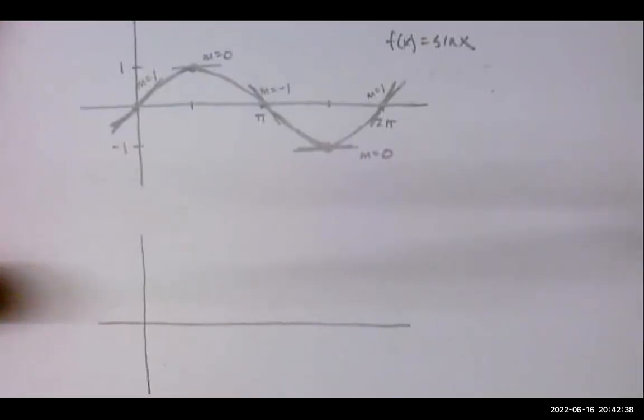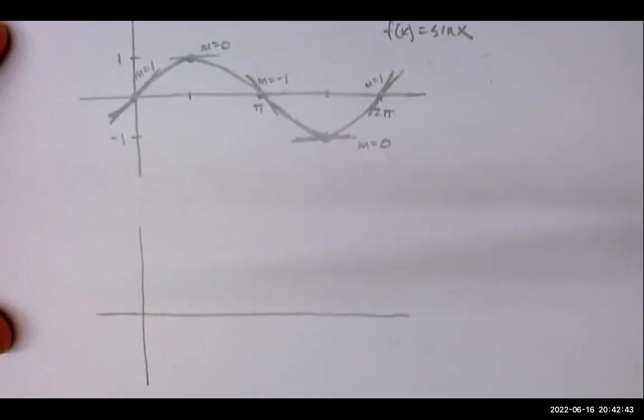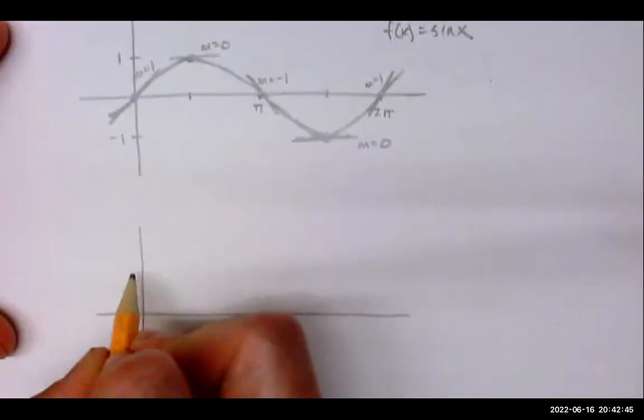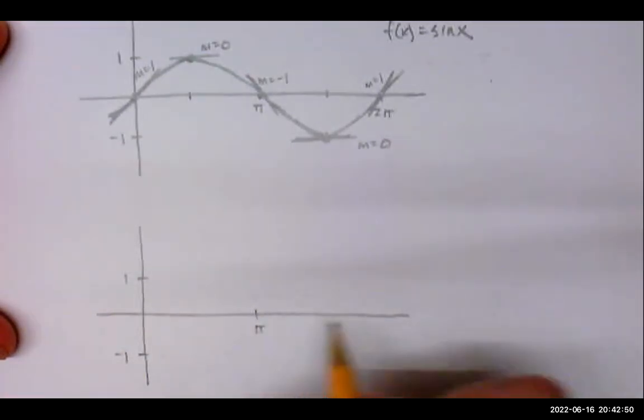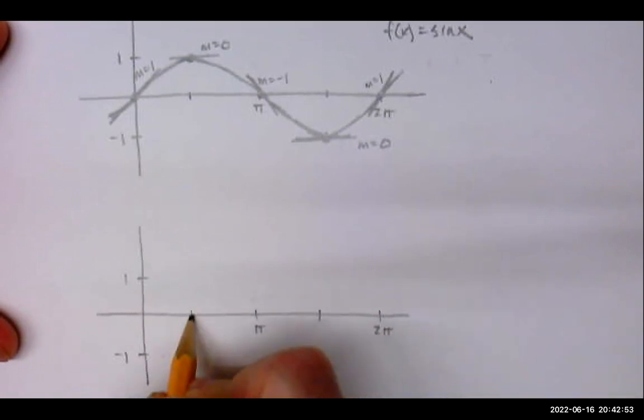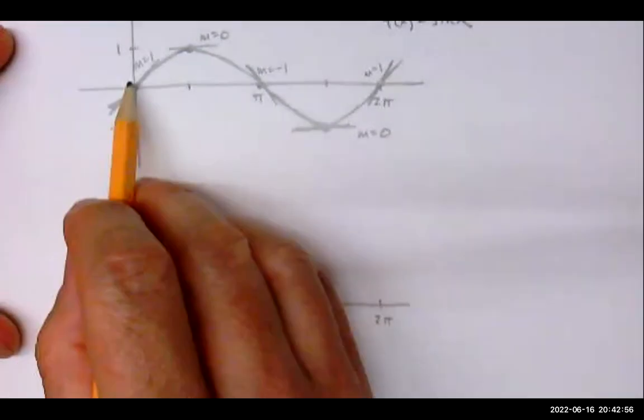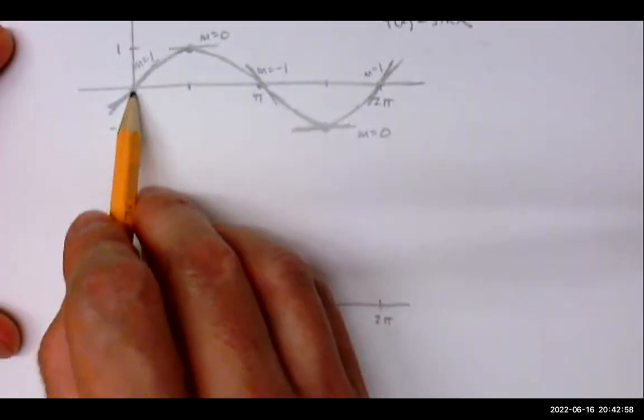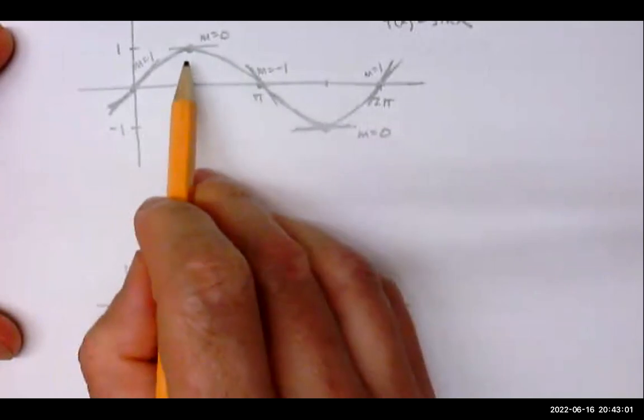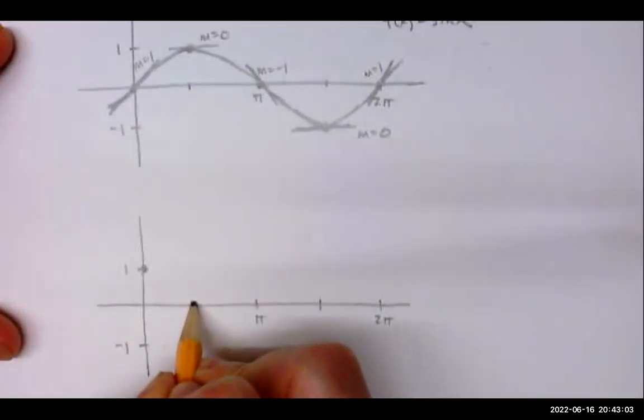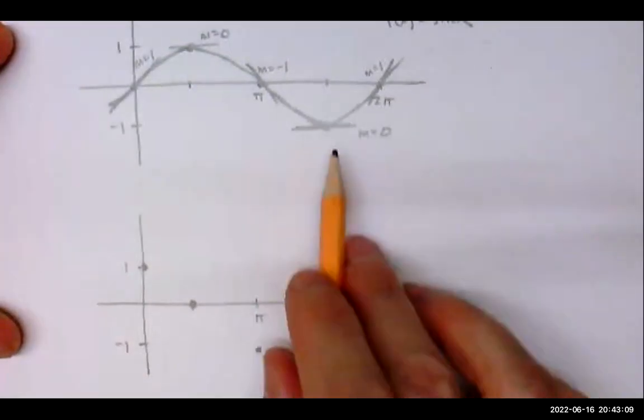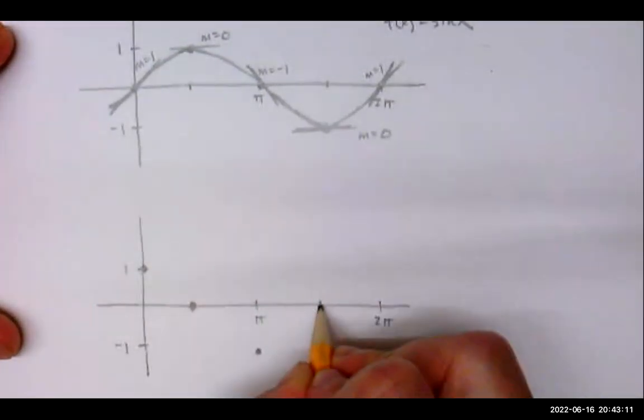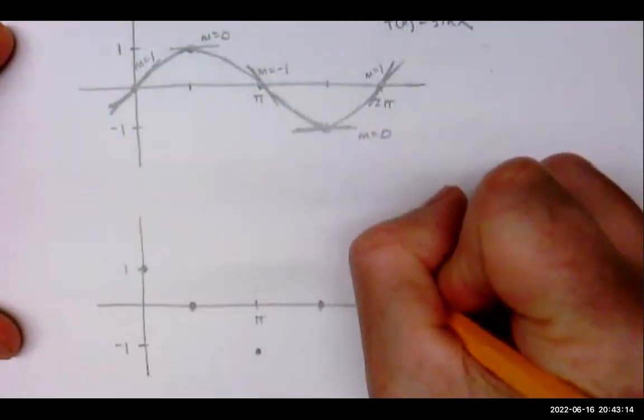Using these points, let's see if we can figure out the graph of the derivative. We've got one and negative one. At zero it's got a slope of one, at π/2 a slope of zero, at π a slope of negative one, at 3π/2 a slope of zero, and at 2π a slope of one.